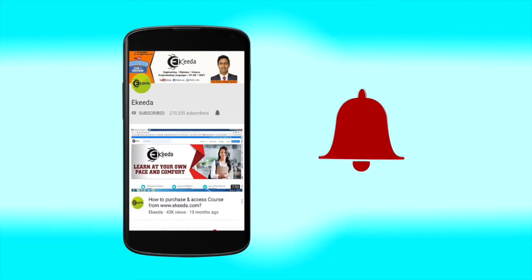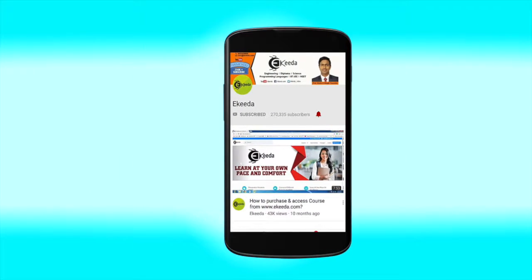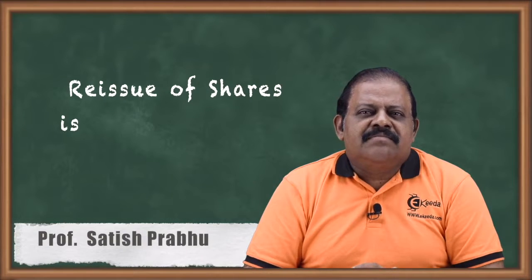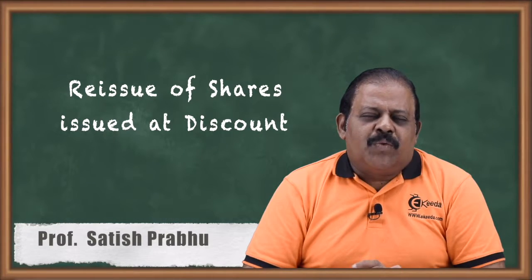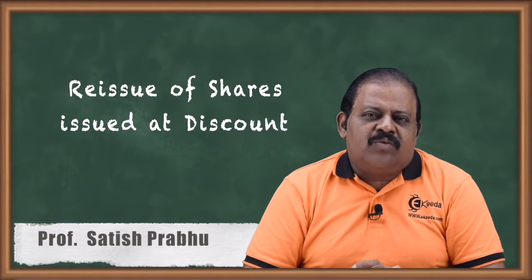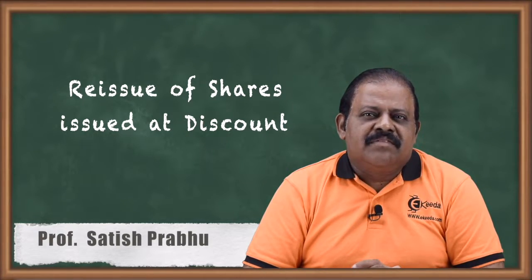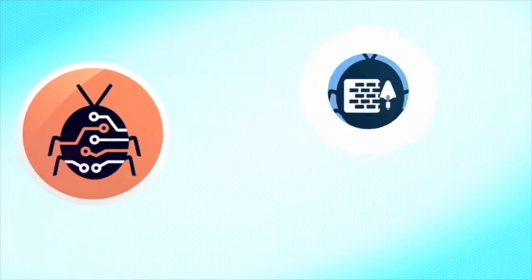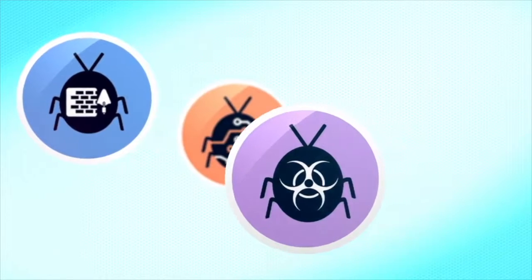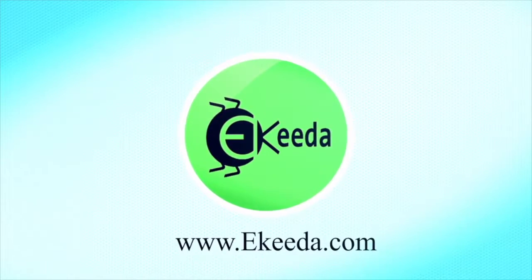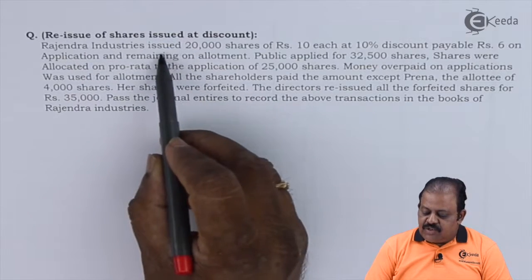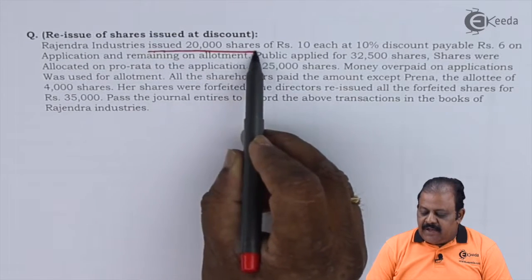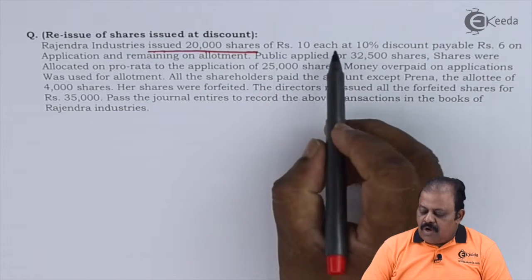Click the bell icon to get the latest videos from Ikeda. Let us discuss one question where shares are originally issued at discount and then reissued. Rajendra Industries issued 20,000 shares of rupees 10 each at 10% discount.